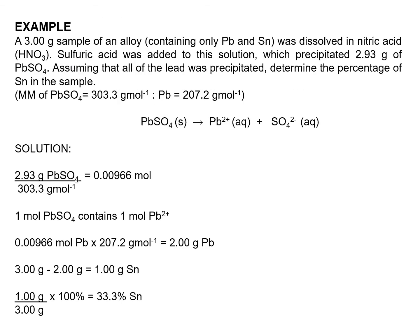In this slide, an example of gravimetric analysis is given. A 3g sample alloy containing only lead and tin was dissolved in nitric acid. Sulfuric acid was added to the solution, which precipitated 2.93g of lead sulfate. Assuming all of the lead was precipitated, determine the percentage of tin in the sample.